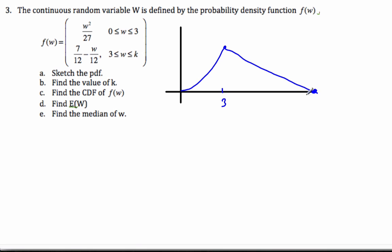I want to find what this value here is. To find that value, if I let 7/12 minus W/12 equal 0, I can easily see if I bring this over, 7/12 equals W/12, so W equals 7. This here is 7. This is a sketch of the PDF.